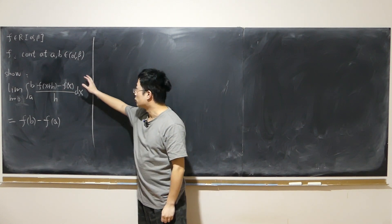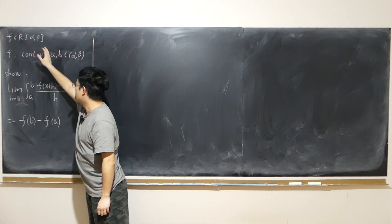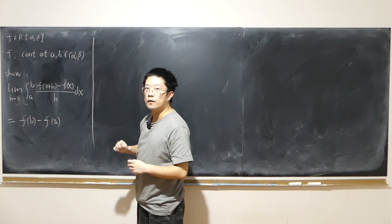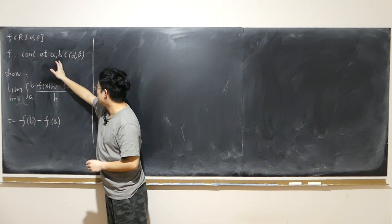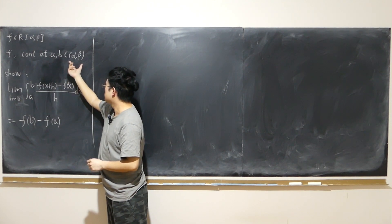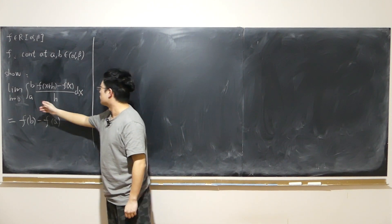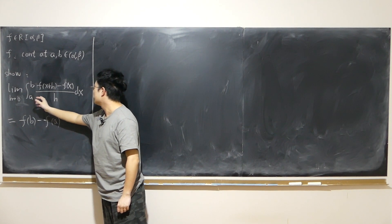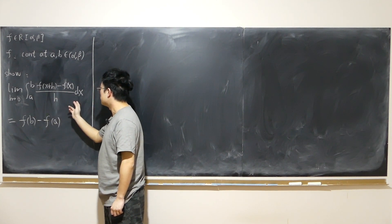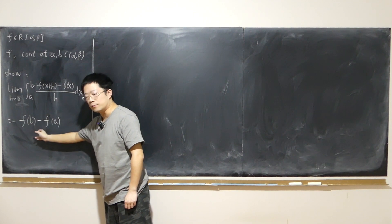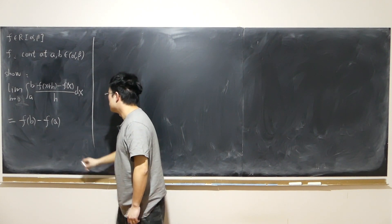We have a function that is Riemann integrable over the open-closed interval (alpha, beta), and the function is also continuous at points a and b inside this interval. Show that the limit as h approaches zero of the integral from a to b of [f(x+h) - f(x)] / h dx is equal to f(b) minus f(a).